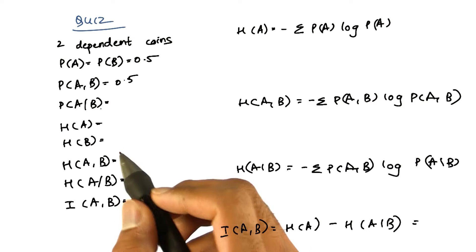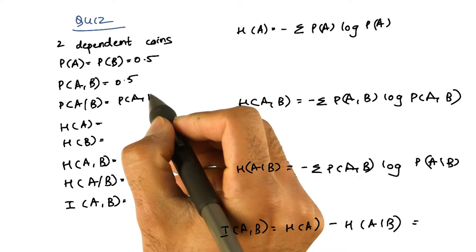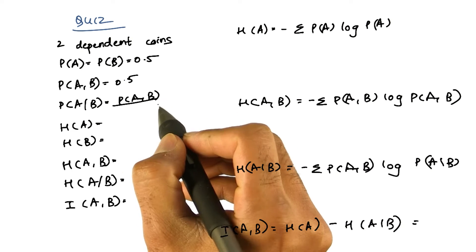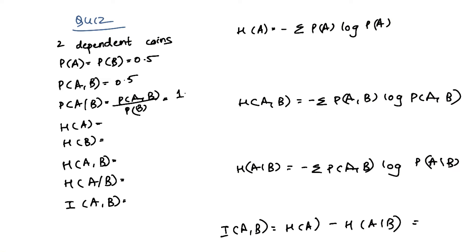What is the conditional probability? The conditional probability is given as probability of A comma B upon probability of B. So the conditional probability is 1.